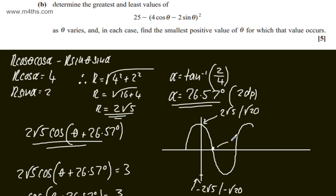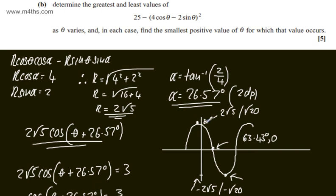The zero crossing normally at 90° has been shifted 26.57° to the left, giving 63.43 degrees. The minimum point, normally at 180°, has moved back 26.57°, giving 154.43 degrees, where the function equals minus root20. Squaring that gives 20, and squaring the zero gives 0.